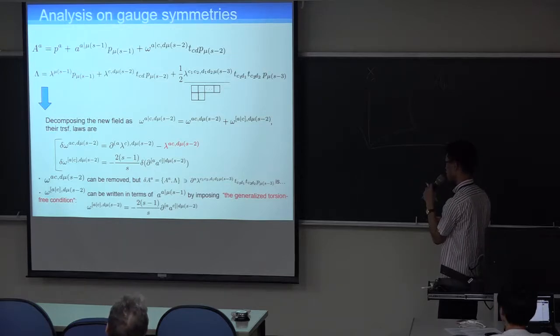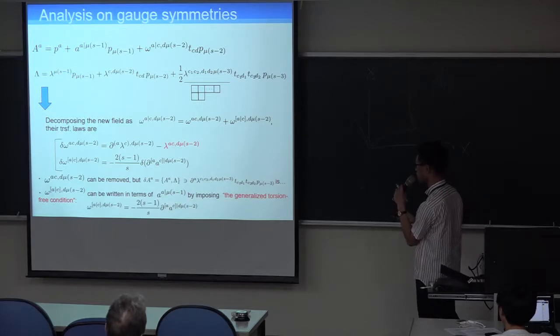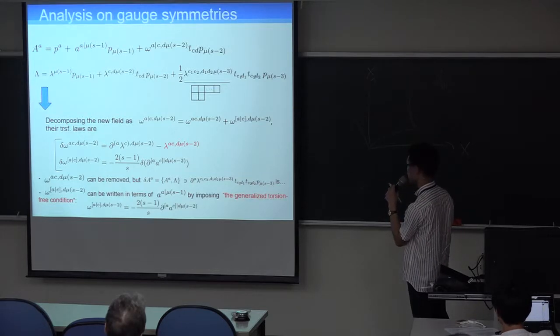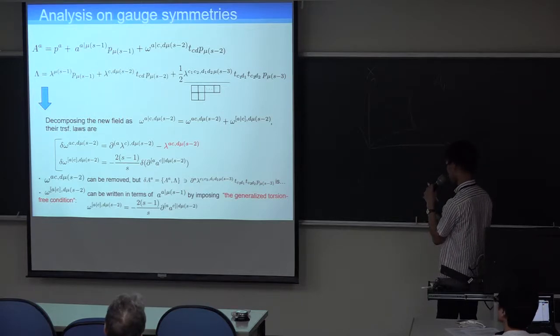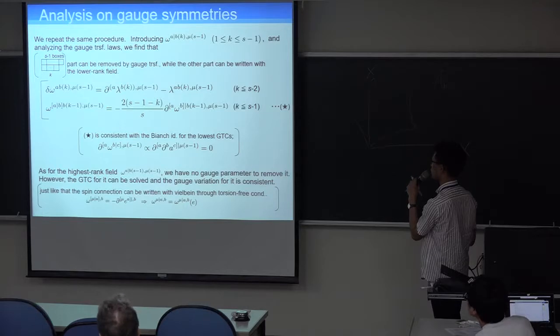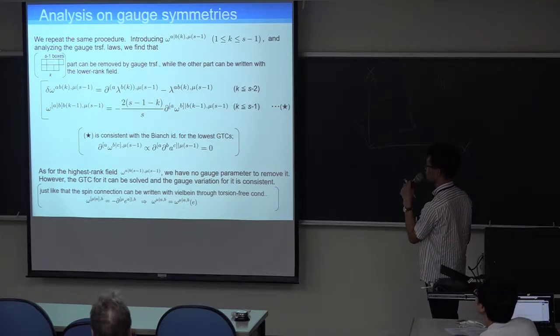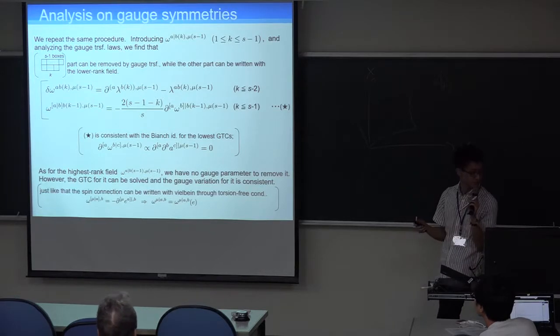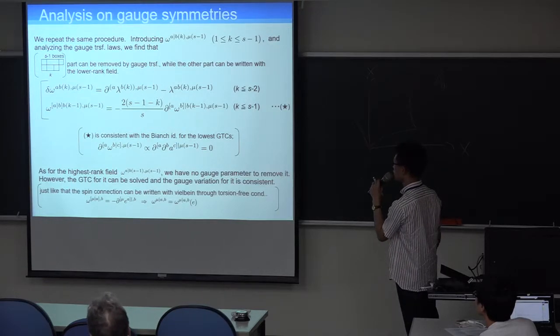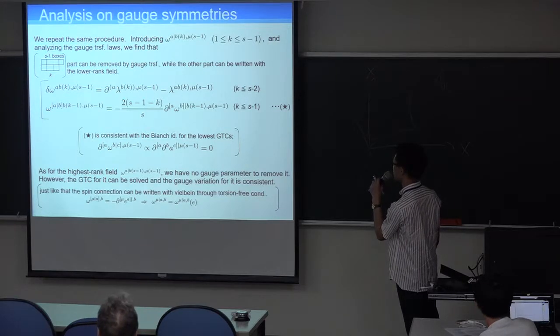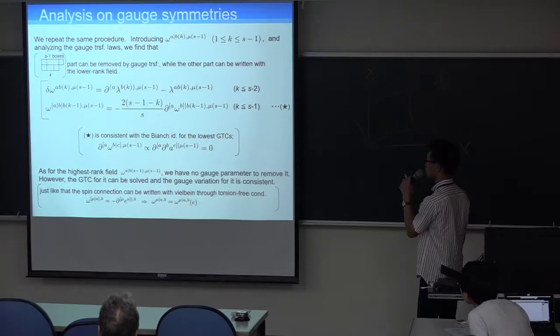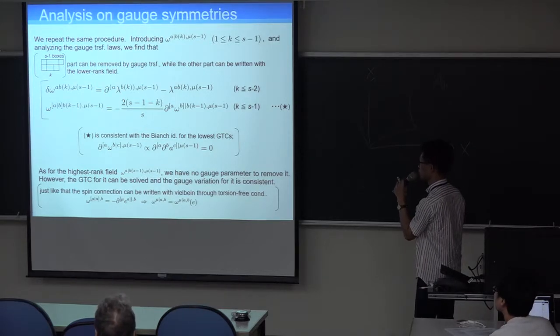And as for the other part, the transformation of it is just the same as the derivative of the original field. So we can write omega square bracket A slash C is written by an original field by imposing the generalized torsion-free condition. We impose this condition. So there are no independent degrees of freedom in omega. In this case, again, there is a gauge variation which is not absorbed in any field. So we have to introduce some further auxiliary fields. And we repeat the procedure, introducing some auxiliary fields, and the gauge transformation rule is analyzed.